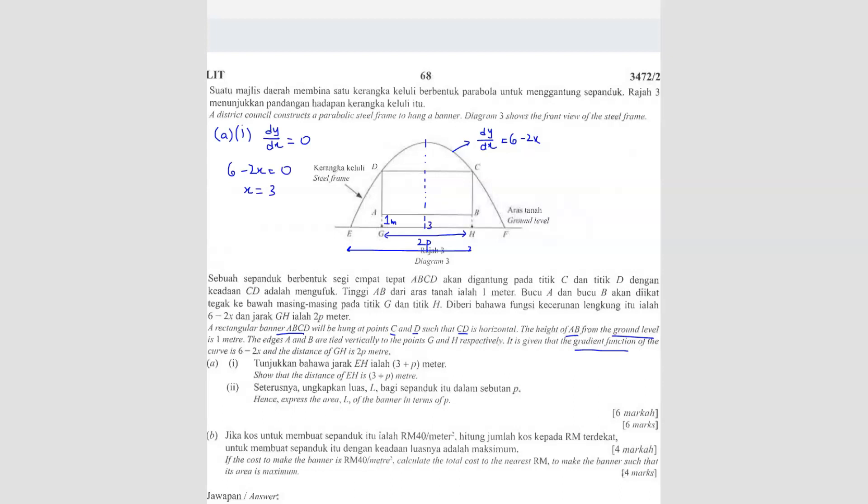So we know that this part here is 3. So what does that mean? It means the axis is going to be here. So this is the x, this is the y. Here is the origin, 0, 0. So this is 3 meters. From the center, the maximum point, here is x equals to 3. This line here. Clear? So what does that mean? So if you want to find EH, this whole thing here is 3, right? So 3 plus, so you know this is 2p. So half of 2p is, here is p, here is p as well. P plus p is 2p. So that means EH is 3 plus p. So that's how you show.